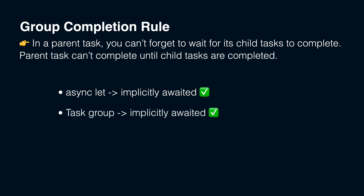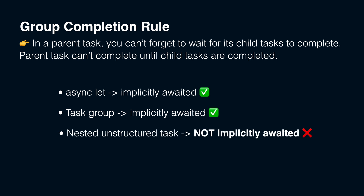A task group will implicitly await the completion of its child tasks when execution exits the task group closure, so the parent task can complete after that as well, ensuring that the group completion rule works as expected too. However, a nested unstructured task, if not awaited, will not cause the external task to wait for its completion. It behaves like a spawn-and-forget mechanism, which means it doesn't follow the group completion rule — which is expected because it is unstructured and has no parent. As you can see in the example, the root task completes even before the nested task is started, but we can achieve the desired behavior if we explicitly await the nested task inside the root task.